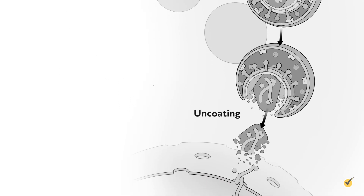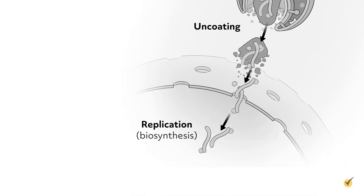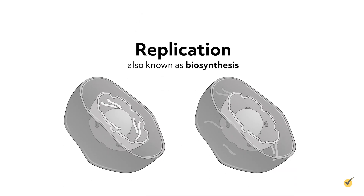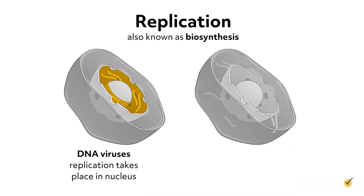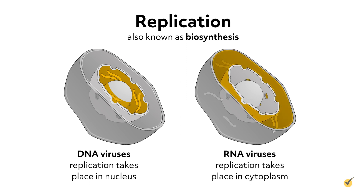Once inside the host cell, the third stage, uncoating, takes place. This means that the capsid degrades and releases nucleic acid into the cytoplasm of the host cell. The fourth stage is replication, also known as biosynthesis, and this process varies depending on whether it's a DNA or RNA virus, as well as the type of RNA virus. With most DNA viruses, replication takes place in the host's nucleus, but with most RNA viruses, replication takes place in the host cell's cytoplasm.